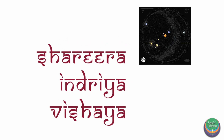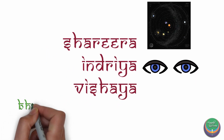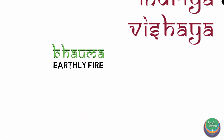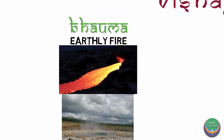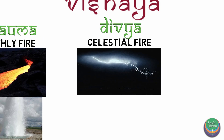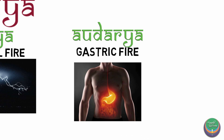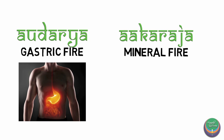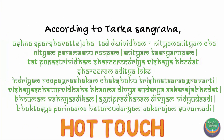The bodies which are Tejasya are explained as Aditya Loka, which includes all the stars, planets, and even the sun. Chakshur Indriya, located in the Netra, is said to be the Tejasya Indriya, responsible for perception of sight. Tejasya Vishaya are of four types: Bhawma or earthly fire, which includes fossil fuels, lava, and hot springs; Divya or celestial fire, which includes lightning born out of the sky; Audarya or gastric flame present in the abdomen responsible for digestion and metabolism; and Akraja or mineral fire, seen in gems, metals, and other minerals. This concludes the explanation of Agni Mahabhuta according to Tarkasangraha.